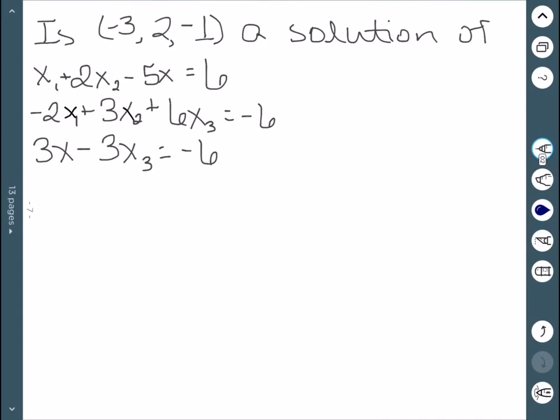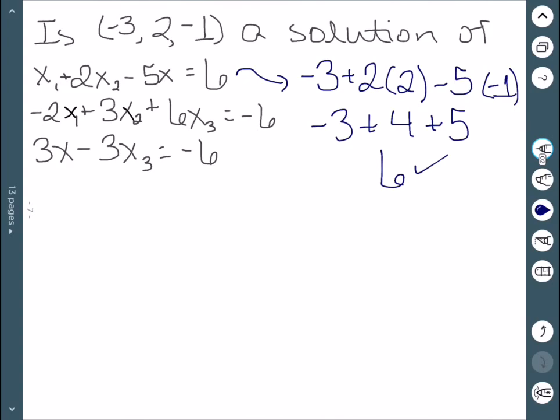One more. Is (-3, 2, -1) a solution of this? Well, if we start with the first equation, x1 is negative 3, x2 is 2, and x3 is negative 1. This would be negative 3 plus 4 plus 5 which is 6. So that gave us a true statement.